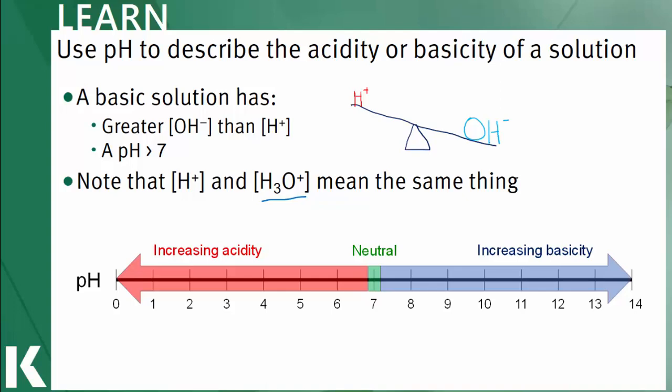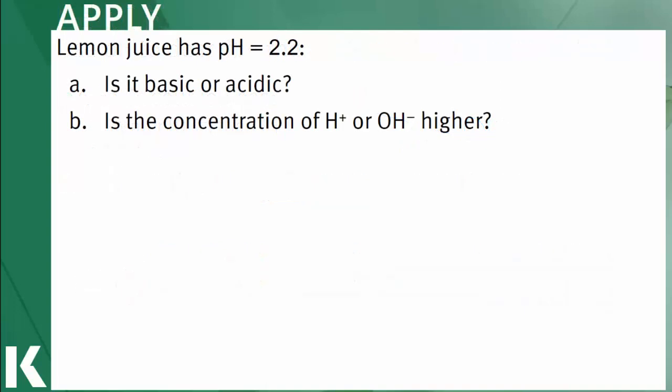Let's use this information to answer some questions. We're told that lemon juice has a pH of 2.2, and we're asked to get some information based on the pH.